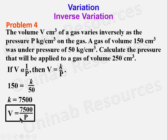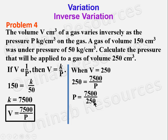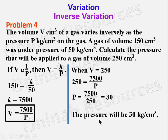With k = 7,500, the formula is V = 7,500/P. To calculate the pressure for a gas of volume 250 cm³, we substitute V = 250: 250 = 7,500/P, so P = 7,500/250 = 30. Therefore the pressure will be 30 kilograms per cubic centimeter.